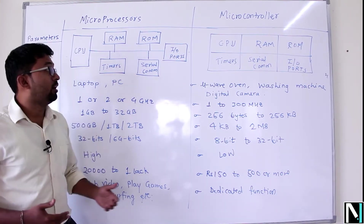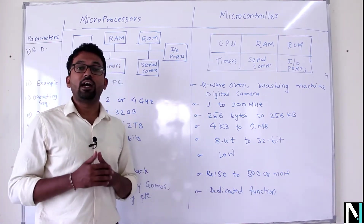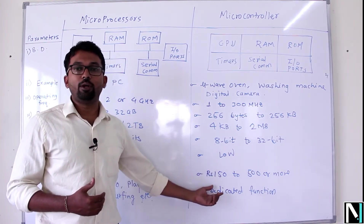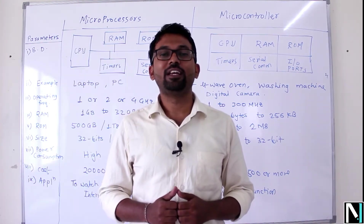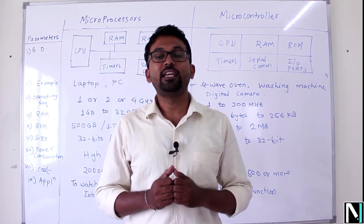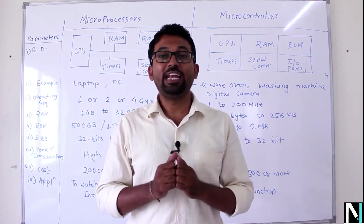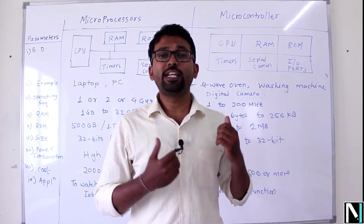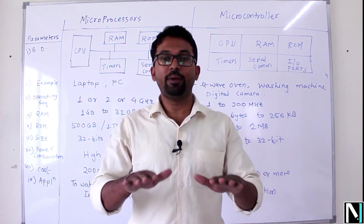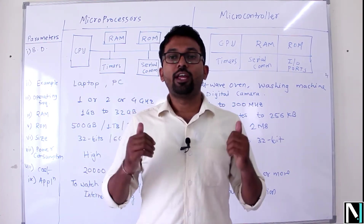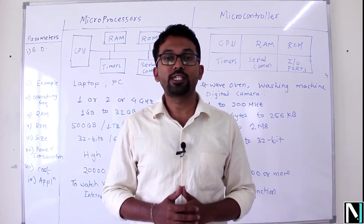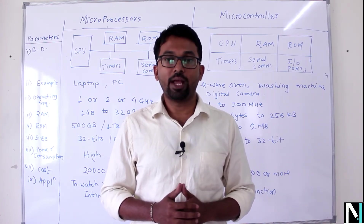In terms of application, microprocessors are used to watch video, internet surfing, playing games, or creating documents. Microcontrollers are dedicatedly used for a particular function. A microcontroller based system can be defined as any computing system other than a desktop PC or laptop that performs a dedicated function — for example, a digital camera, which only captures and stores images to a memory card.